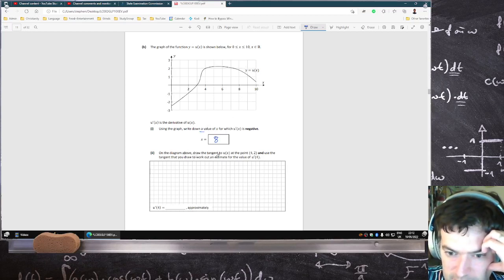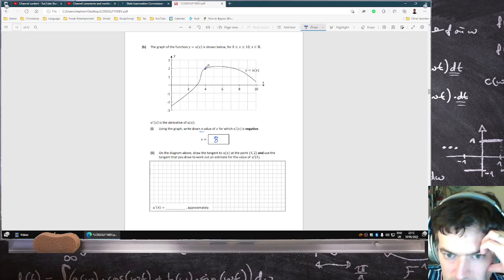On the diagram above, draw a tangent at the point (4,2), and use this tangent you draw to work out an estimate for the value of u' at (4,2), a tangent.